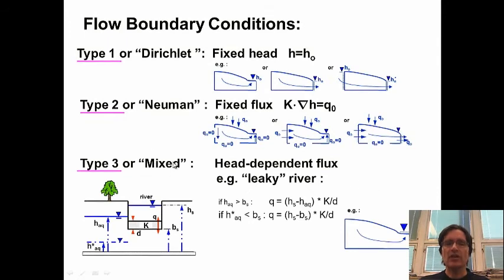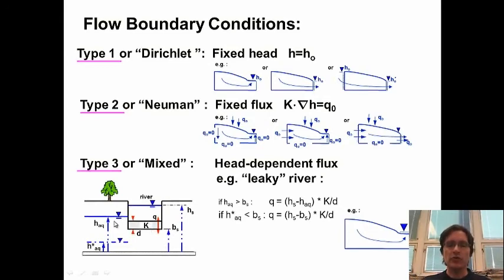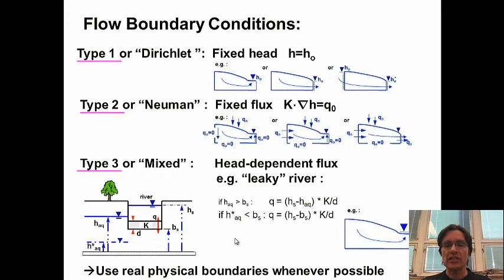There's actually a third type — a mixed or Type 3 condition — which depends on both the head and the flux. In this example it's a head-dependent or leaky river: the flux across the layer at the base of the river depends on the relative head difference between the aquifer and the river. You can have a gaining or losing stream depending on this difference, giving a positive or negative flux. The main idea is to use physically realistic boundaries whenever possible — choose a watershed divide if it's near enough to your system, or choose a river that makes sense as a physical boundary.